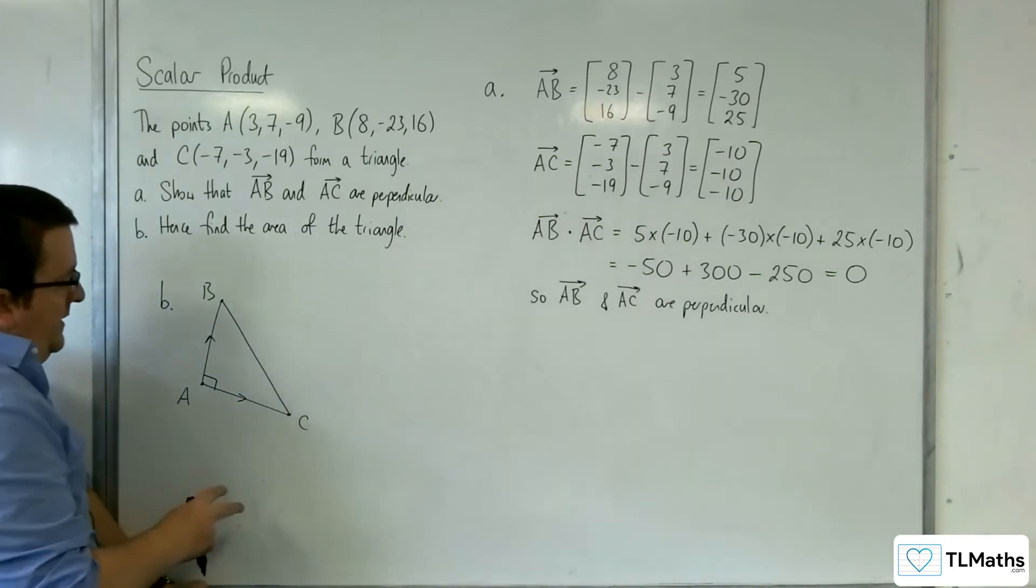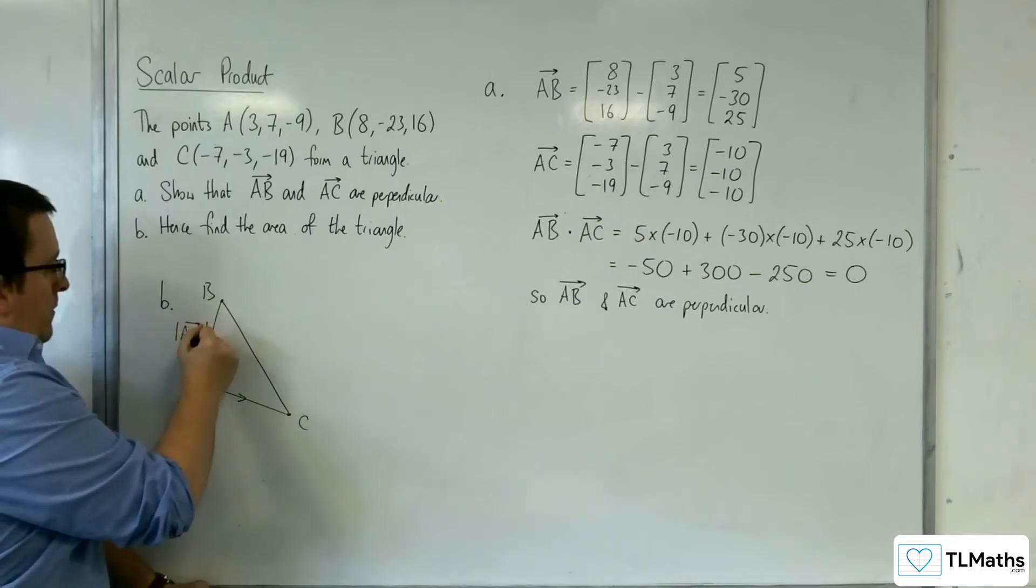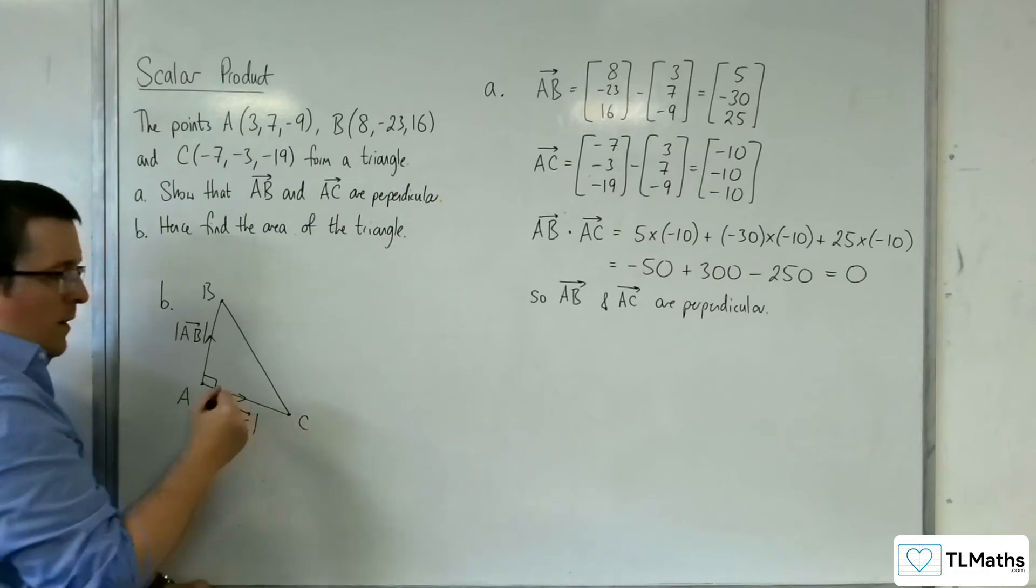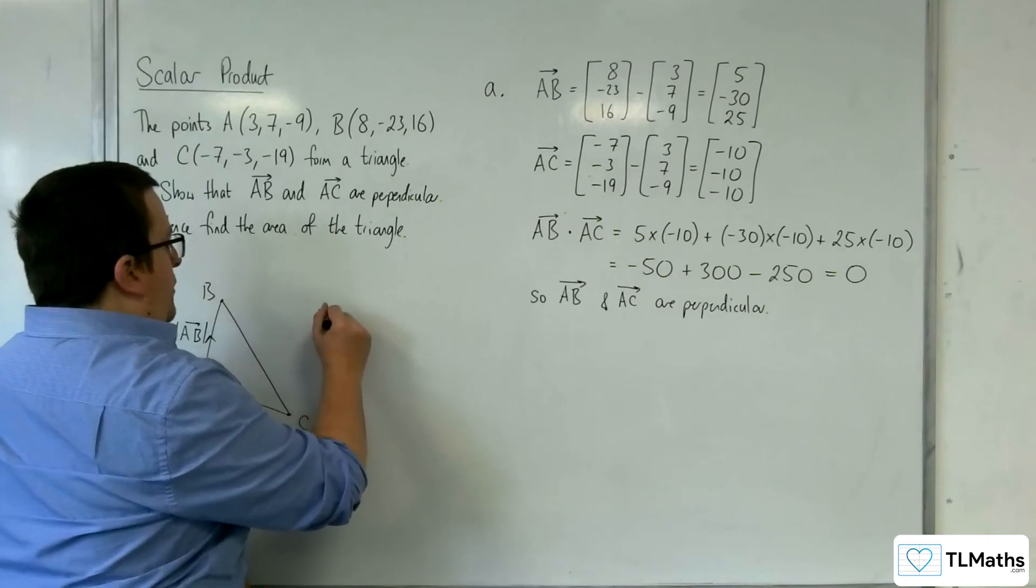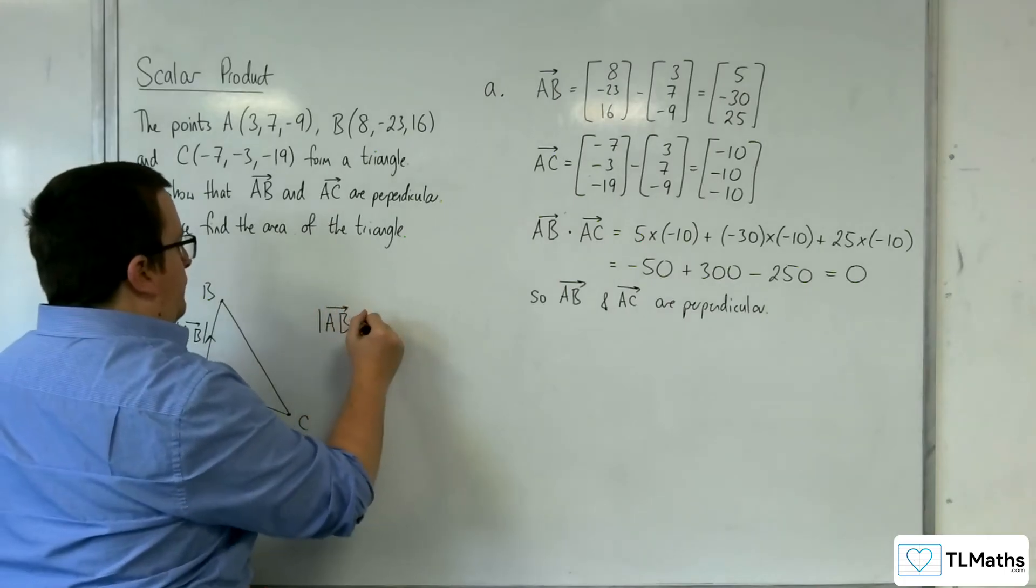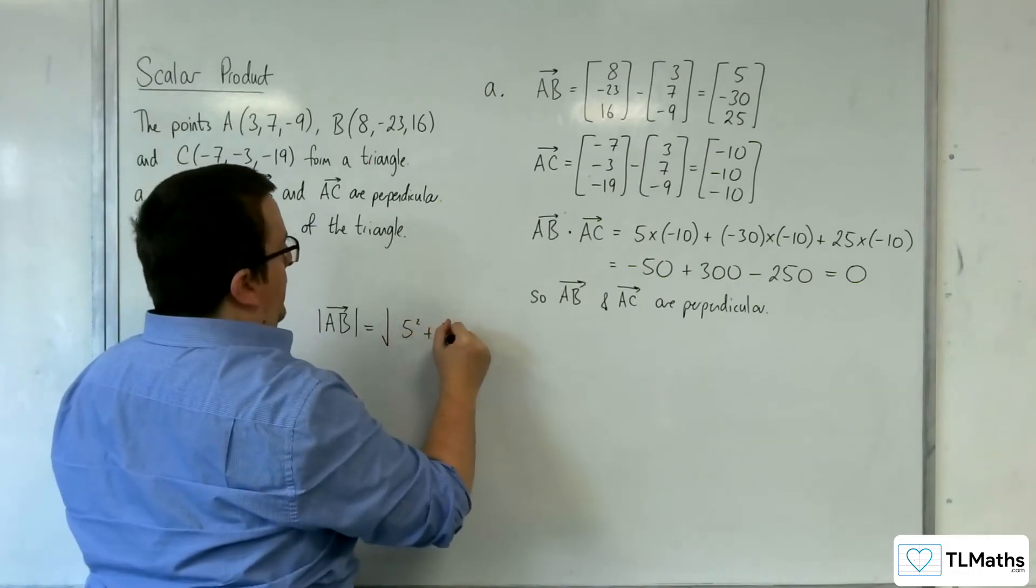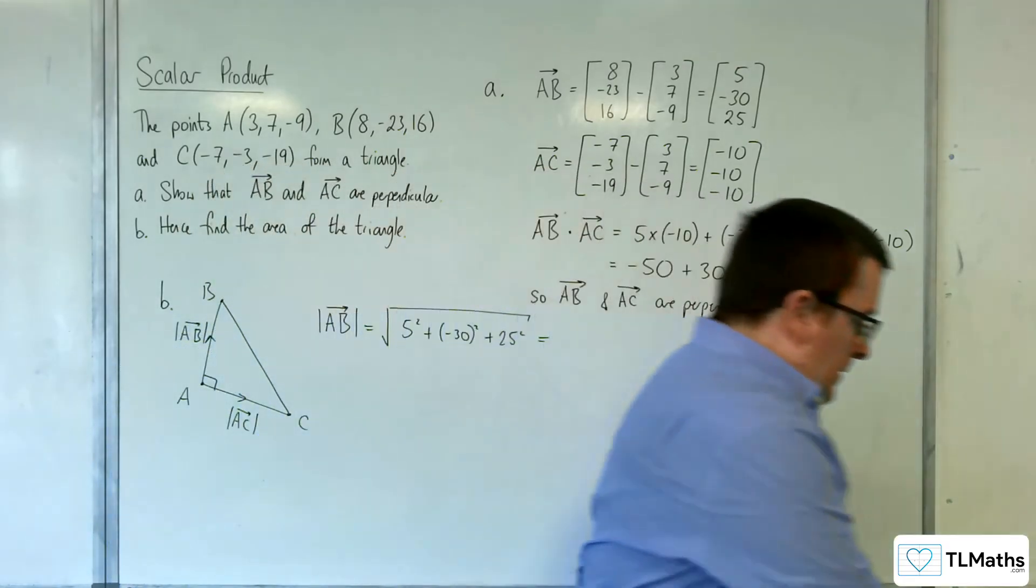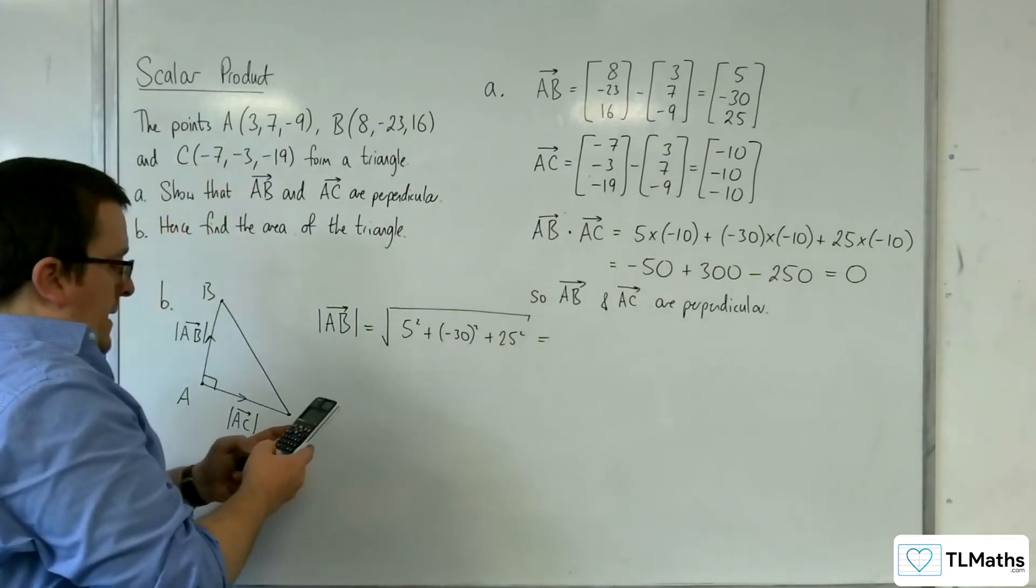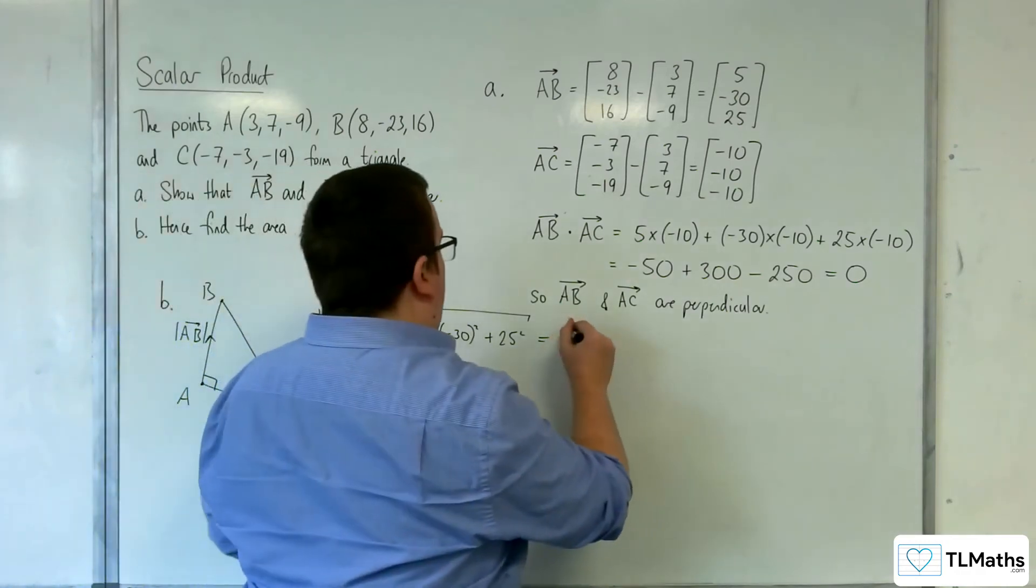So if we worked out the length of AC, then we can use half base times height to work out the area of the triangle. So we'll work out the length of AB, which is going to be equal to the square root of 5 squared plus minus 30 squared plus 25 squared. So 5 squared plus 30 squared plus 25 squared, square rooted, is 5 root 62.